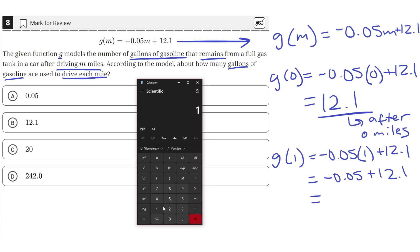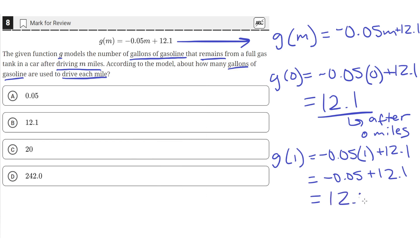If we get out our calculator, we have 12.1 minus 0.05, and we get 12.05.